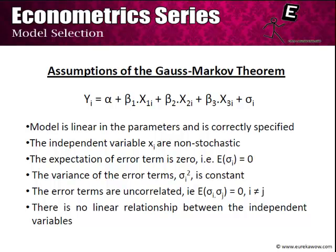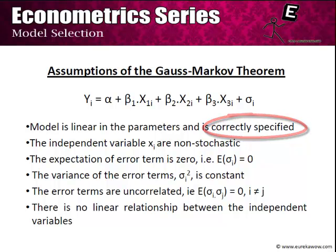Hence, unless our model is correctly specified, we will be violating the Gauss-Markov theorem and our OLS estimates will not be BLUE — that is, best linear and unbiased. So what are the various kinds of problems that we face while coming up with the model?